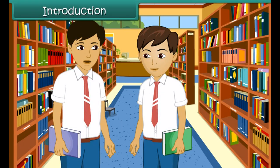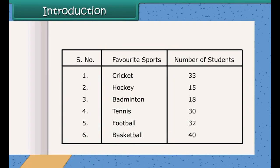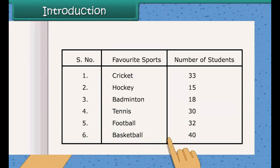Ravi, have you done today's maths homework? Yes, I have gathered some information about the different sports liked by the students of our class. Okay, but how will you interpret which is the favorite sport among the students? It's easy. I have arranged the data in tabular form. Now by looking at the data I can say, basketball is liked by the highest number of students.